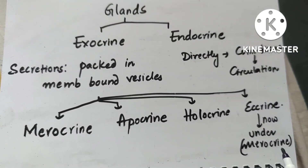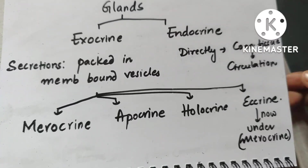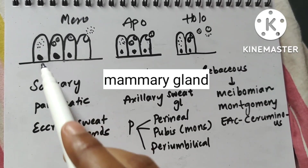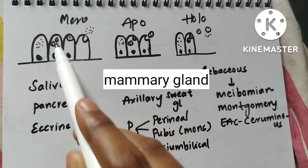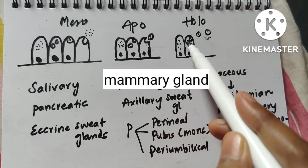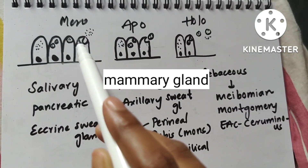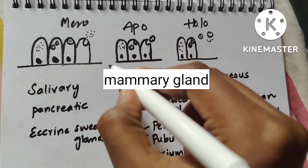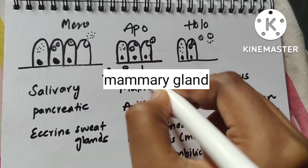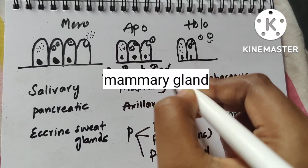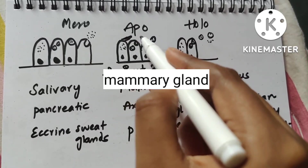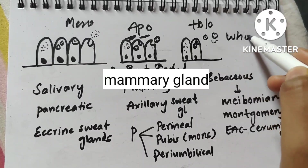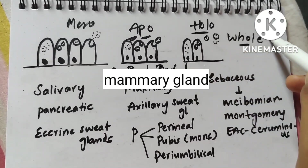So there are in total 3 glands that you need to learn: merocrine, apocrine and holocrine. All these glands have membrane-bound vesicles in them. In merocrine glands, the vesicle comes towards the cell surface and secretions are released out. In apocrine glands, a part of the cell gets pinched off — remember it like AP is a part. In holocrine glands, the whole cell gets disintegrated to secrete its contents — remember 'whole' for holocrine.